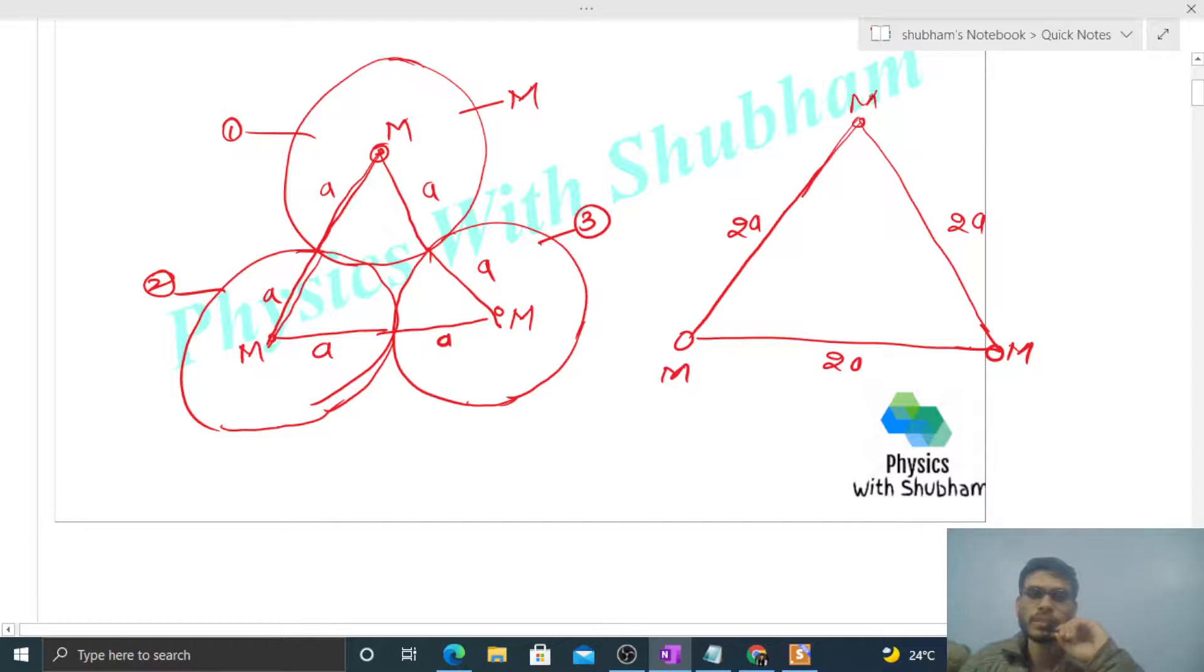In this way, let's say for the first sphere, this one - we want to find the net force on it by the other two spheres. So the second sphere will pull the first sphere with a force capital F, and the third sphere will also pull with the same force.